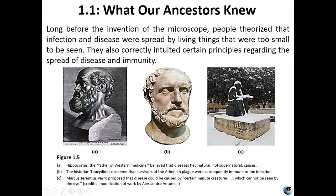Long before the invention of the microscope, people theorized that infectious disease was not caused by anything supernatural — there were living things that couldn't be seen but were being passed between people. Back in Greek and Roman times this was just unheard of, but they were right. Hippocrates — the father of Western medicine — was one of the first to believe disease had a natural cause, not a supernatural one. Thucydides observed that survivors of the plague in Athens were subsequently immune to future infection, which eventually led to the development of vaccines.